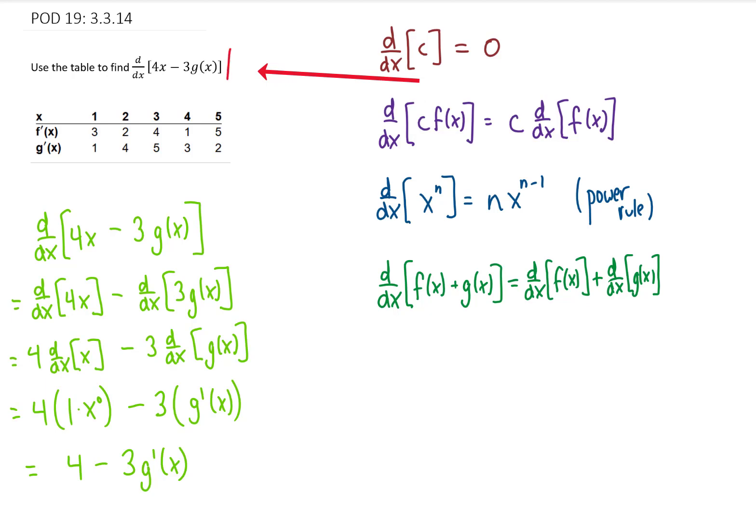And the way that we write that is typically with a vertical line over here, that means evaluated at. And then I'll just pick an x value of 4. So I'm going to carry that evaluated at x equals 4 all the way down this problem into our final answer.